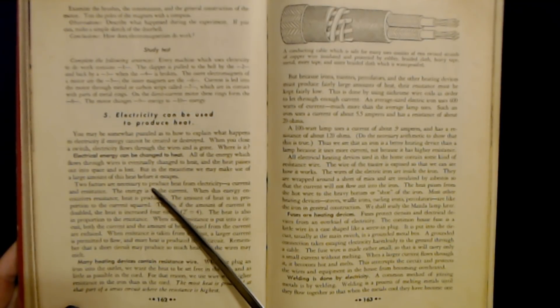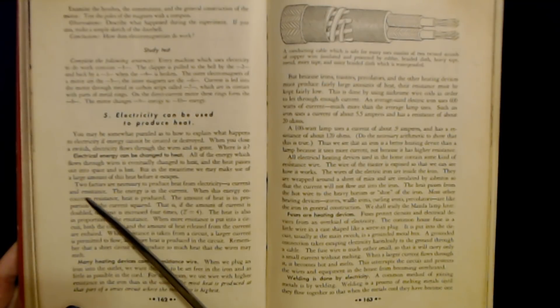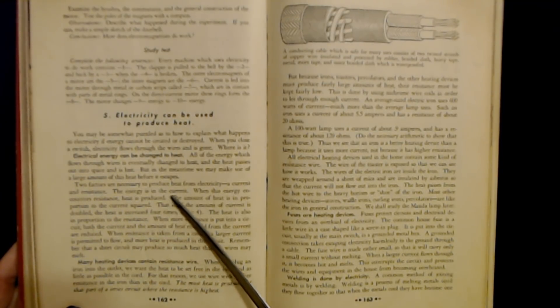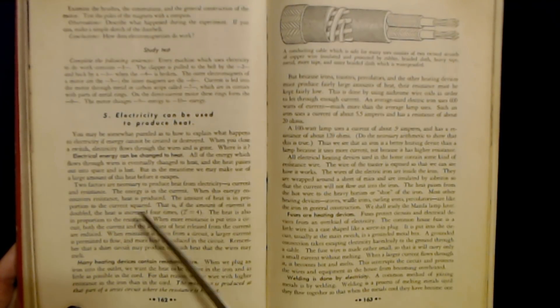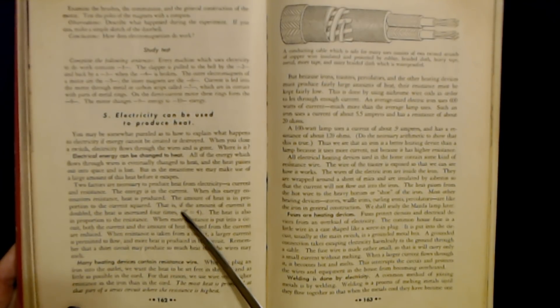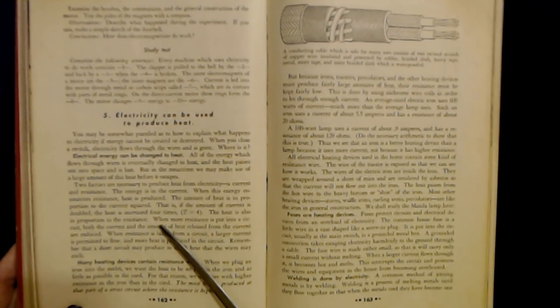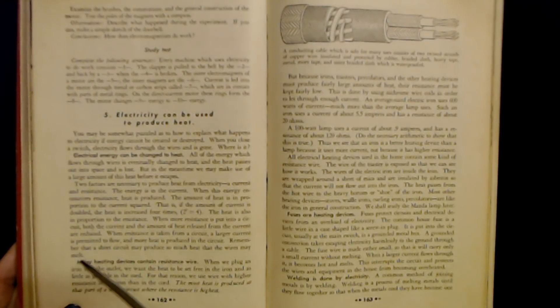Two factors are necessary to produce heat from electricity: a current and resistance. The energy is in the current. When this energy encounters resistance, heat is produced. The amount of heat is in proportion to the current squared. That is, if the amount of current is doubled, the heat is increased four times. Two squared equals four. The heat is also in proportion to the resistance. When more resistance is put into a circuit, both the current and the amount of heat released from the current are reduced. When resistance is taken from a circuit, a larger current is permitted to flow and more heat is produced in the circuit.